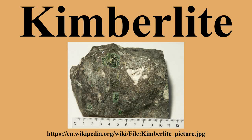Olivine lamproites were previously called Group 2 kimberlite or orangite, based on the mistaken belief that they only occurred in South Africa. Their occurrence and petrology, however, are identical globally and should not be erroneously referred to as kimberlite. Olivine lamproites are ultra-potassic, peralkaline rocks rich in volatiles. Their distinctive characteristic is phlogopite macrocrysts and microphenocrysts, together with groundmass micas that vary in composition from phlogopite to tetraferriphlogopite.